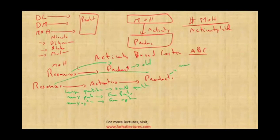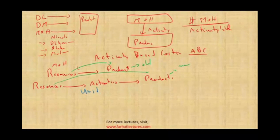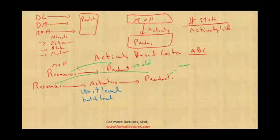So how do we determine those activities? We study our manufacturing process and make certain observations. Some products consume activities on a unit level — every time we produce one unit, some activities are consumed. Some products consume activities at a batch level. Batch level means it doesn't matter how many units we produce — whether one, 1,000, or 5,000 — the cost is the same.